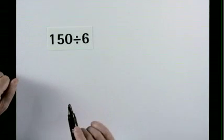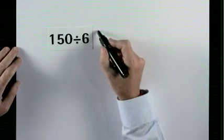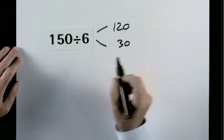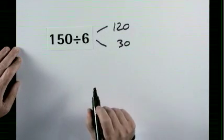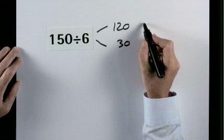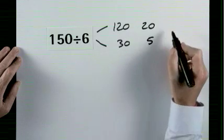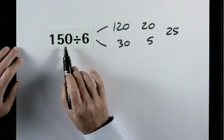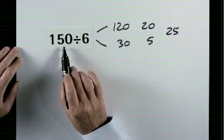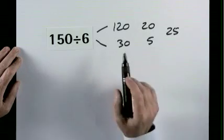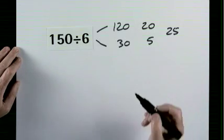150 divided by 6. Why not make 150 into 120 and 30, because both are divisible by 6. 6 goes into 120, 20 times, and into 30, 5 times. Combine. 25. Some people though would recognize the 25 times table. The 25 times table goes into 150, 6 times. The answer must be 25.